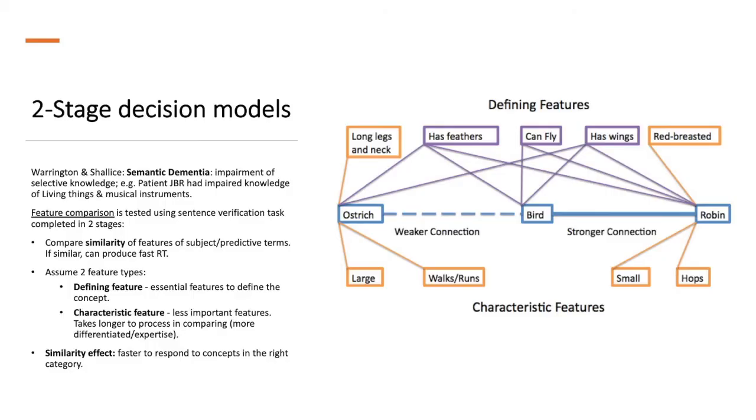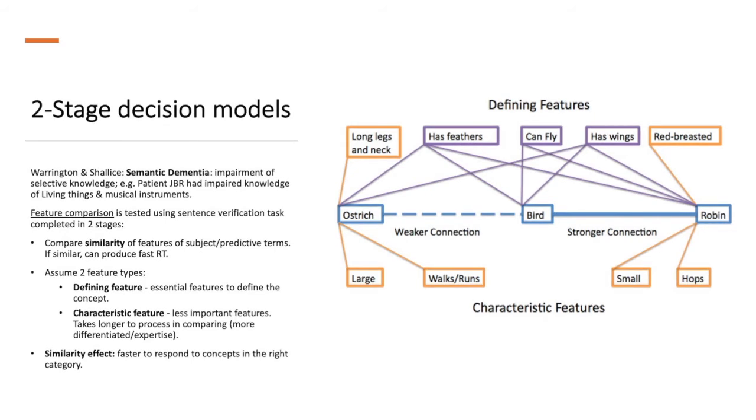Two-stage decision model. Warrington and Chalice studied semantic dementia and found that it was the impairment of selective knowledge. For example, patient JBR had impaired knowledge of living things and musical instruments.